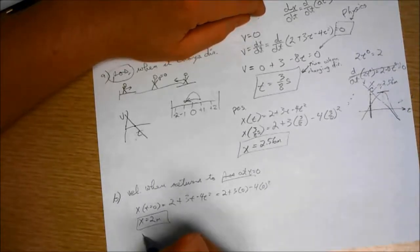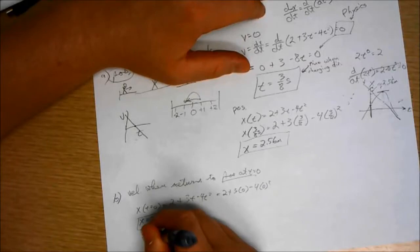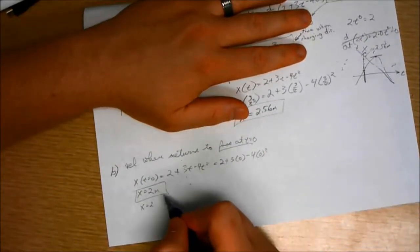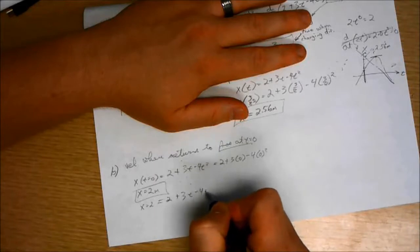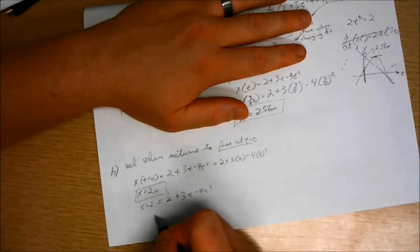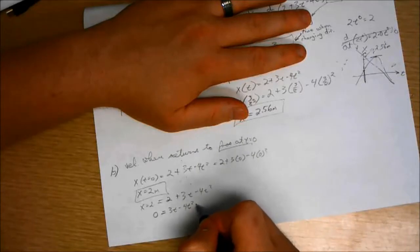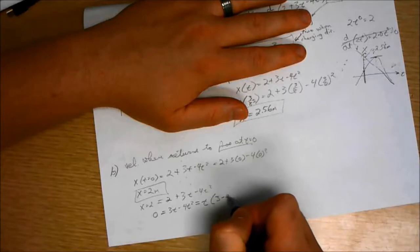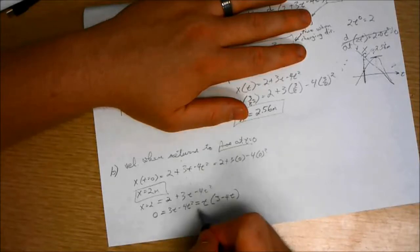So what I'm going to do, I'm going to say x equals 2 meters equals the function for position 2 plus 3t minus 4t squared. I'm going to subtract 2 from each side of the equation, so 0 equals 3t minus 4t squared. It's a second order equation, so we're going to get two solutions. Factor out a t, t times 3 minus 4t. So now we see this has two solutions.